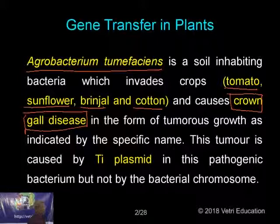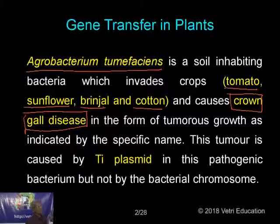Whenever you come across the name of a particular plant or animal, try to learn the binomial. That makes the difference between you and lower standard students. A third-standard boy will just call it a cat, but you should know the zoological name. If shown a mango, a child says 'mango,' but you should say Mangifera indica. So learn the binomials of all the plants.